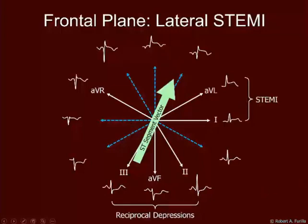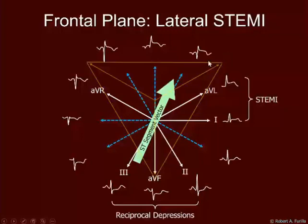If I place the triangle on top, it makes it easier to see: lead 1 and AVL are located on the left shoulder, the superior region, while leads 2, 3, and AVF are inferior. So the vector moving in a superior direction produces STEMIs in leads 1 and AVL and moves away from the inferior leads. The blue arrows point to vectors we are not recording — we record only leads 1, AVL, AVR, 2, 3, and AVF.